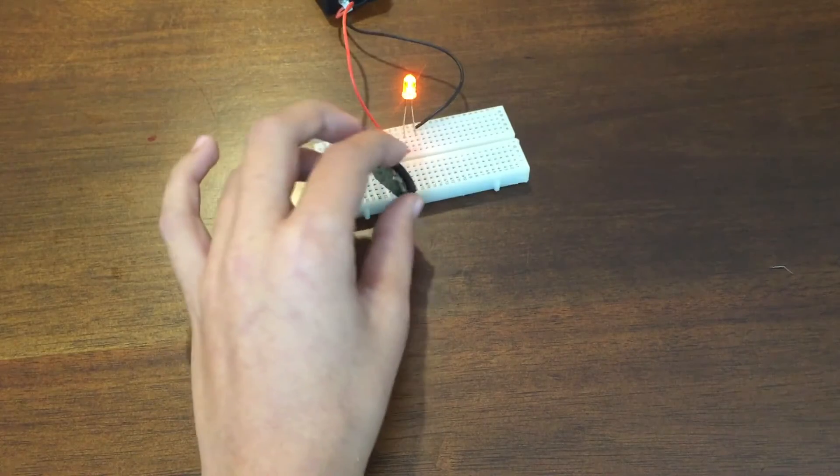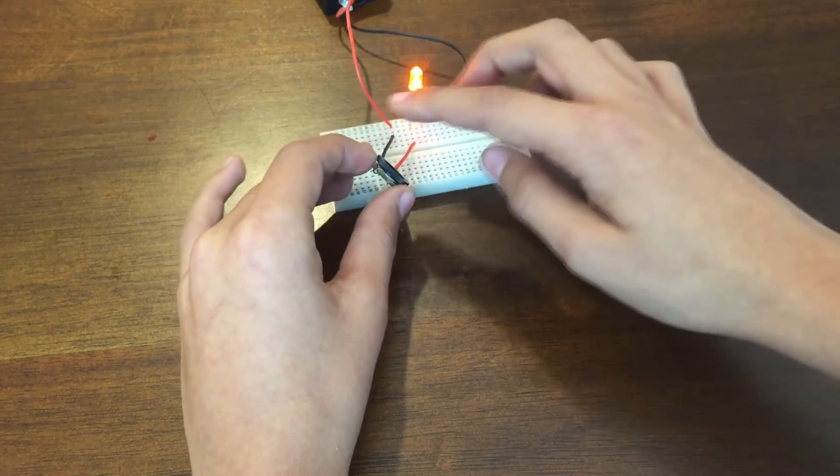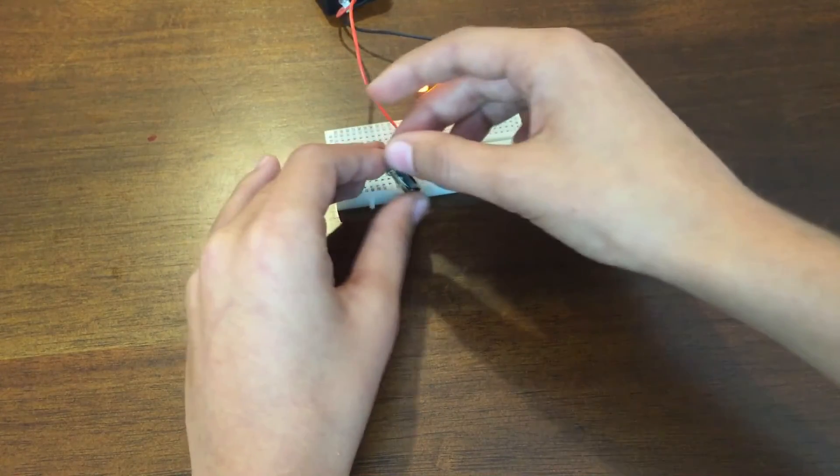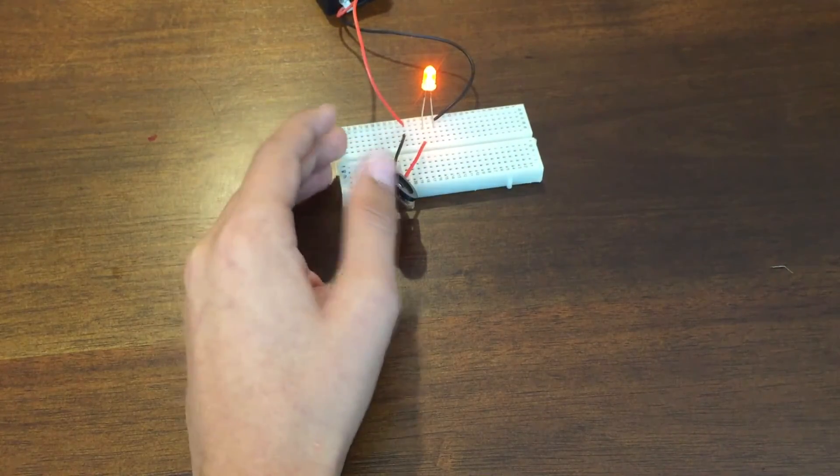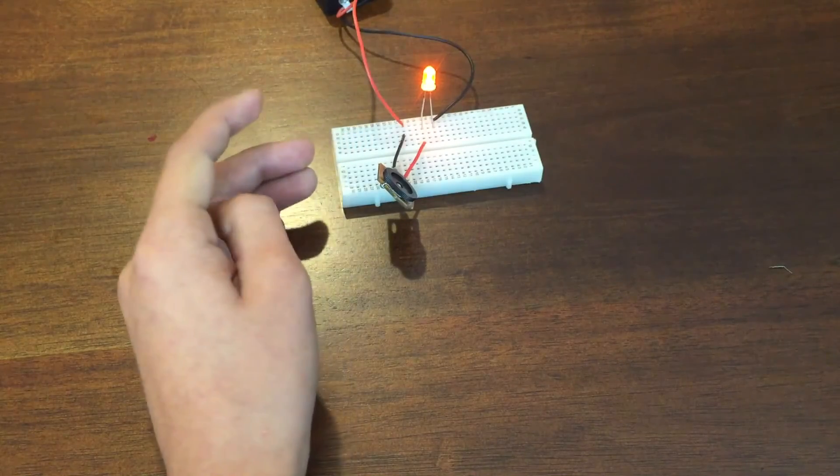So that's pretty much the basics of how you can use a potentiometer in a circuit. You could also use it in an Arduino for digital signals. I'll probably make a video later, so thank you guys for watching, and leave suggestions in the comments.